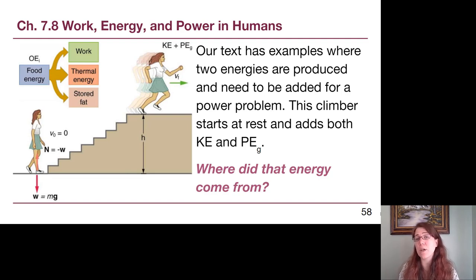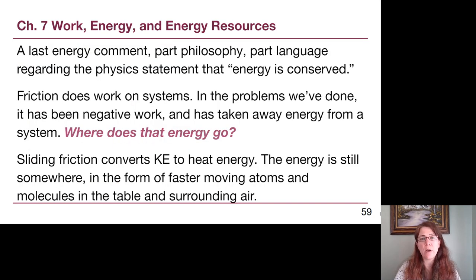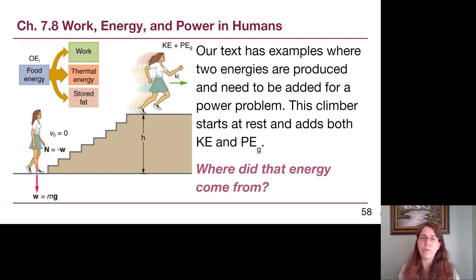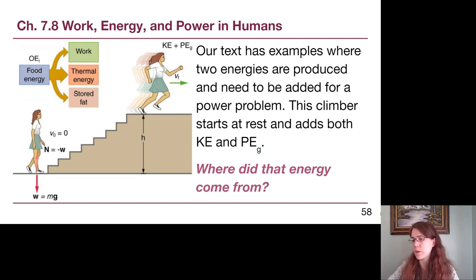That energy has to come from somewhere — from muscles, which are powered by food. We have a conversion factor between joules and food calories, which appears on our equation sheets. For example, looking at a box of popcorn: each cup of popped popcorn provides about 20 food calories worth of energy, most of which powers internal organs, with the remainder available for physical activity like going for a walk.